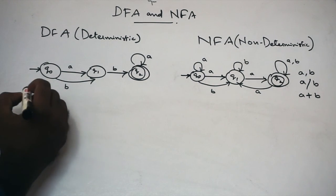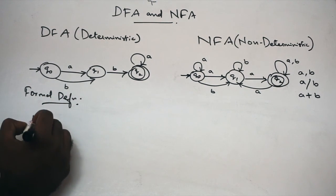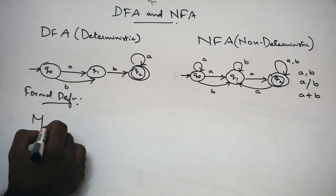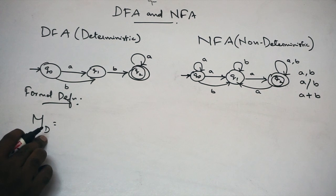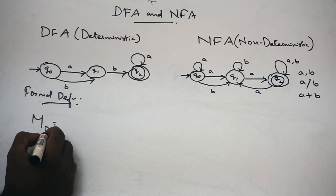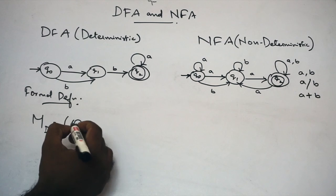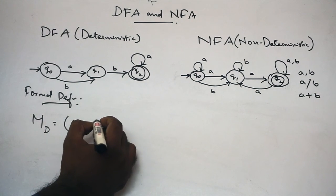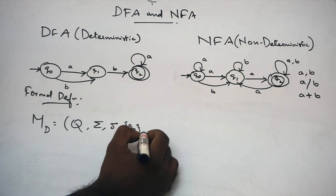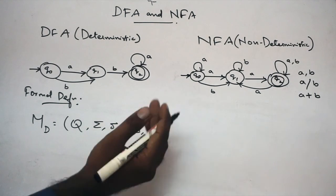Next, formal definitions. M suffix D is DFA. Q is set of states, alphabet, transition function, Q0 is initial state, F is set of final states. Because we can have more than one final state — initial state is one, final state is more than one.